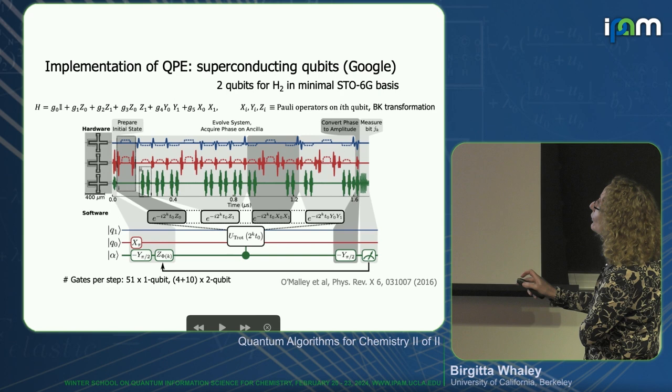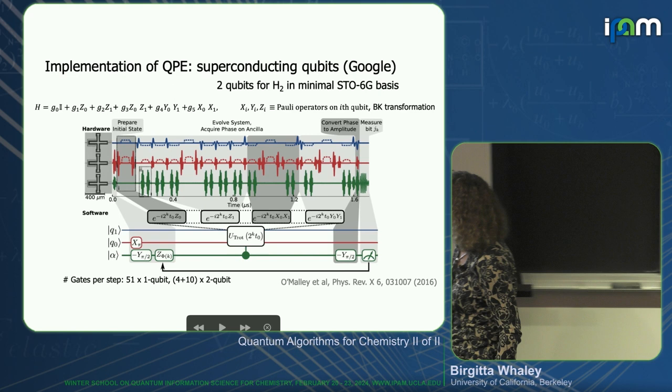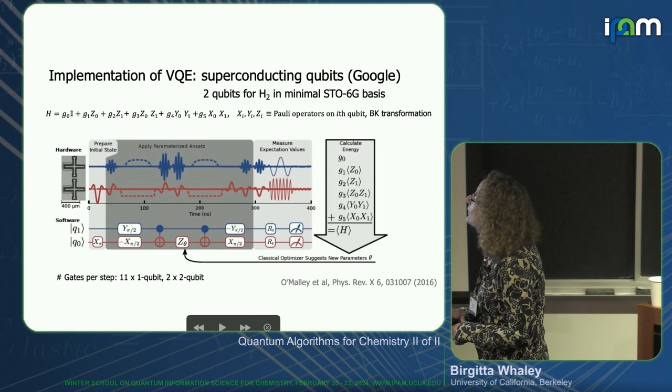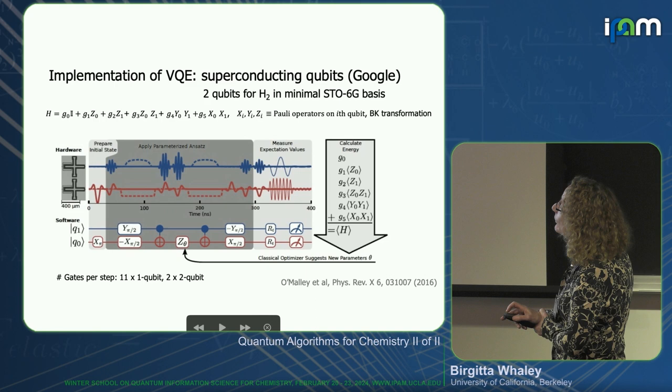This QPE circuit used a total of 51 single-qubit gates and 14 two-qubit gates. For comparison, this is a VQE circuit that the same group did — a paper that compared these two approaches for H2, with the same Hamiltonian and the same Bravyi-Kitaev encoding.